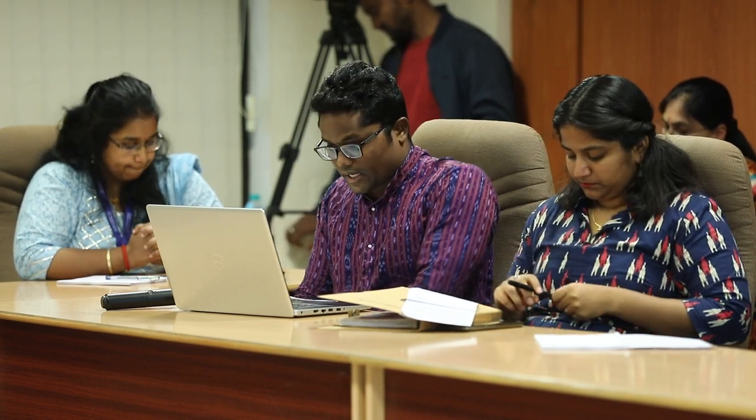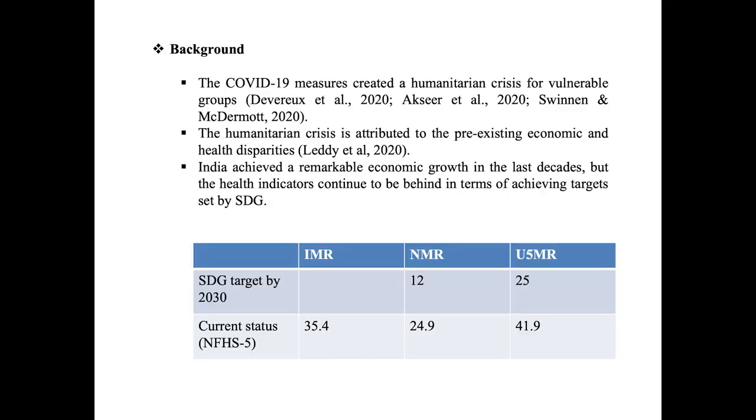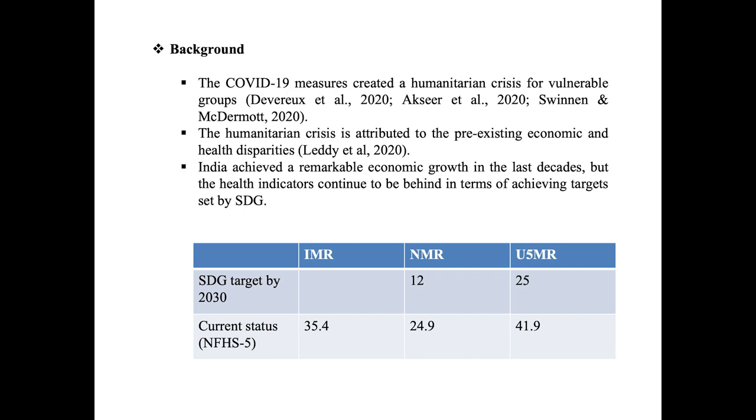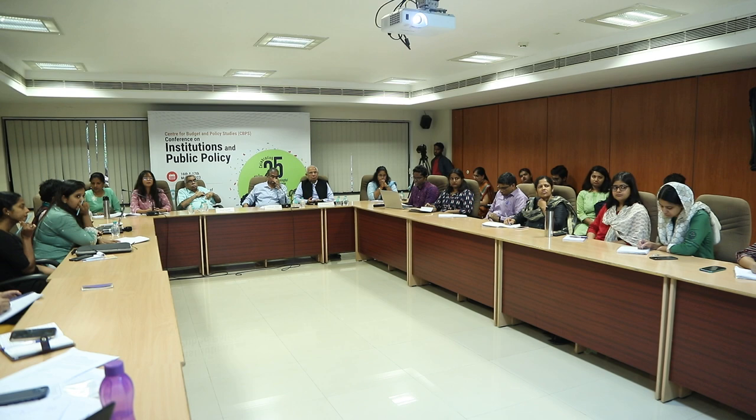Progress in health indicators has been very slow. The Sustainable Development Goals target a neonatal mortality rate of 12 and an under-5 mortality rate of 25 by 2030, but our current status of NMR and under-5 mortality rate are 25 and 42 respectively. We are still far away from achieving the targets set by the SDGs.